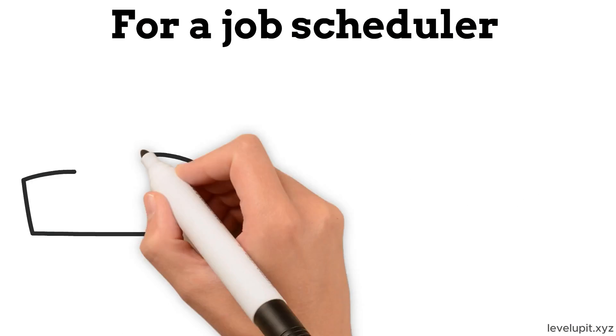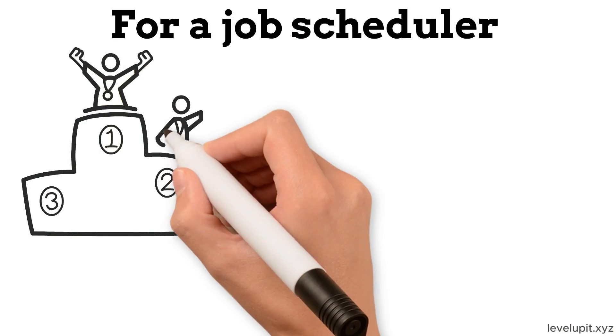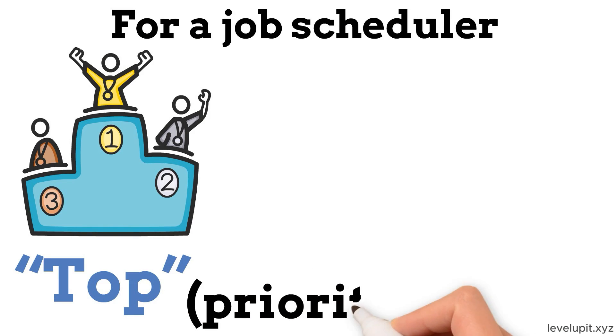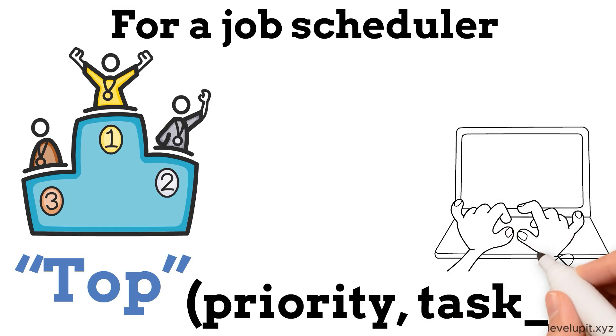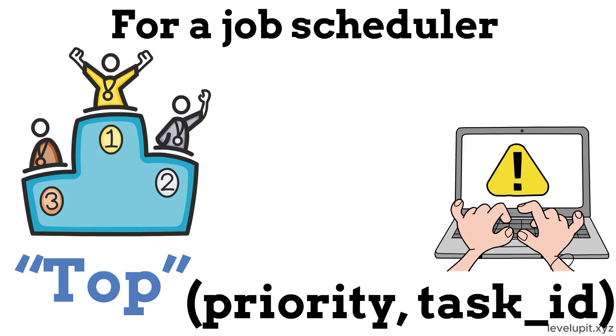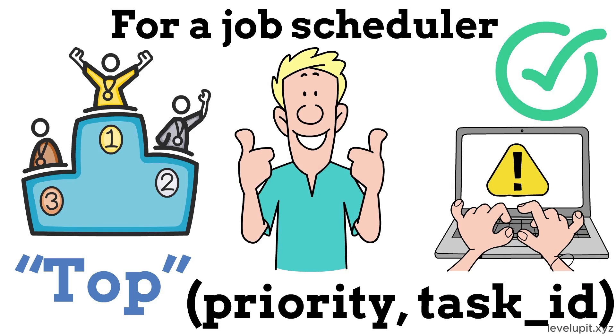For a job scheduler where you repeatedly need the next highest priority task, a heap keeps the current top task accessible. Think of tasks as priority, task_ID. Push tasks into a heap. Pop the highest priority when you are ready to run one. New tasks can arrive and be pushed at any time, and the heap keeps things ordered enough to always find the next one fast.